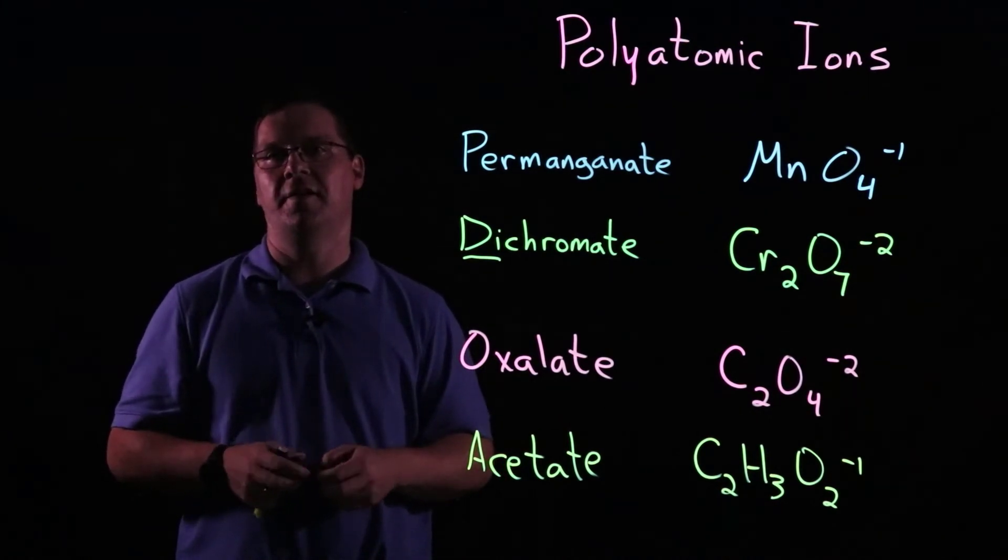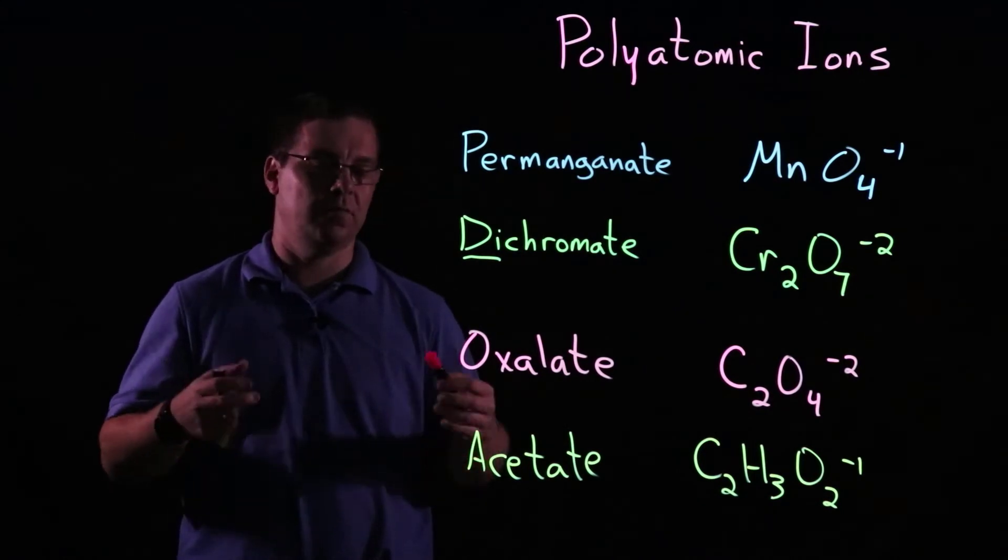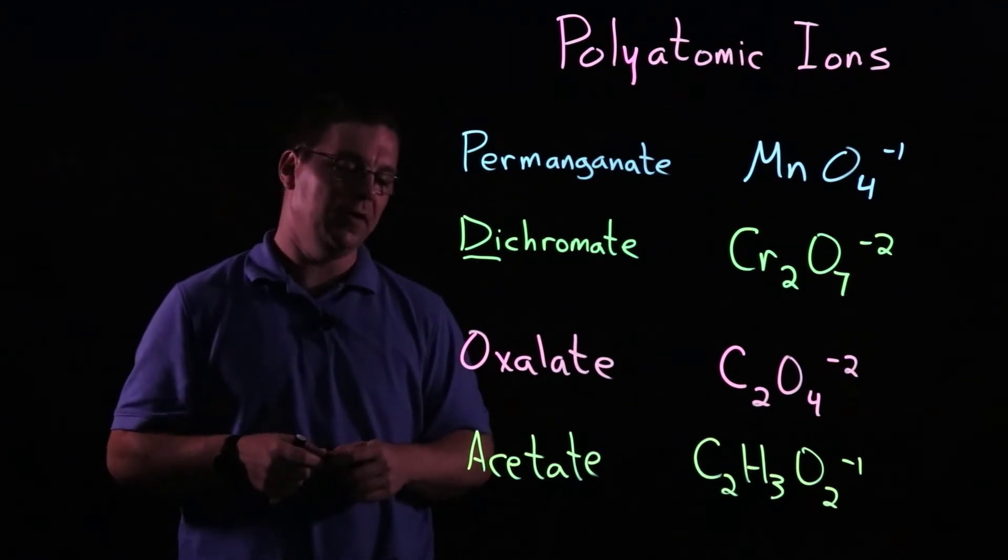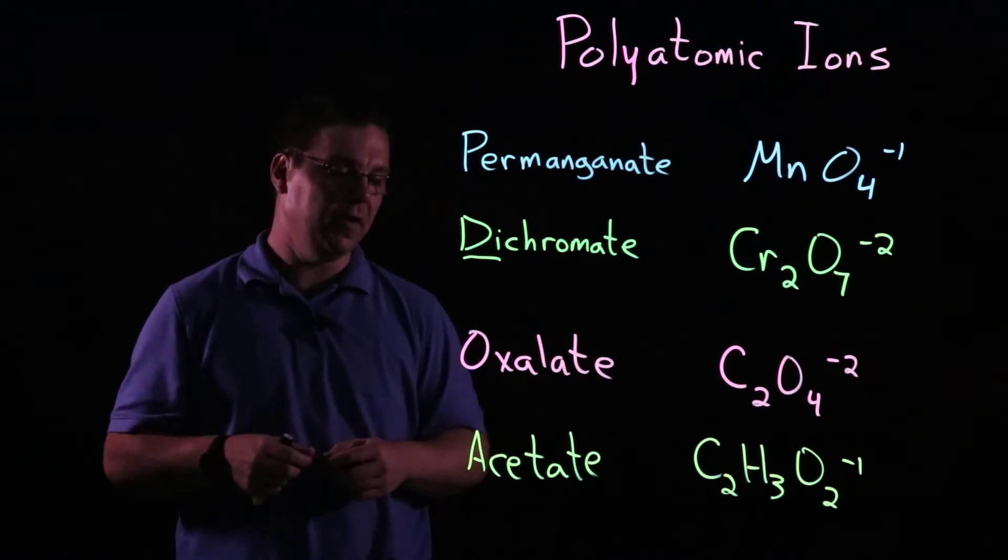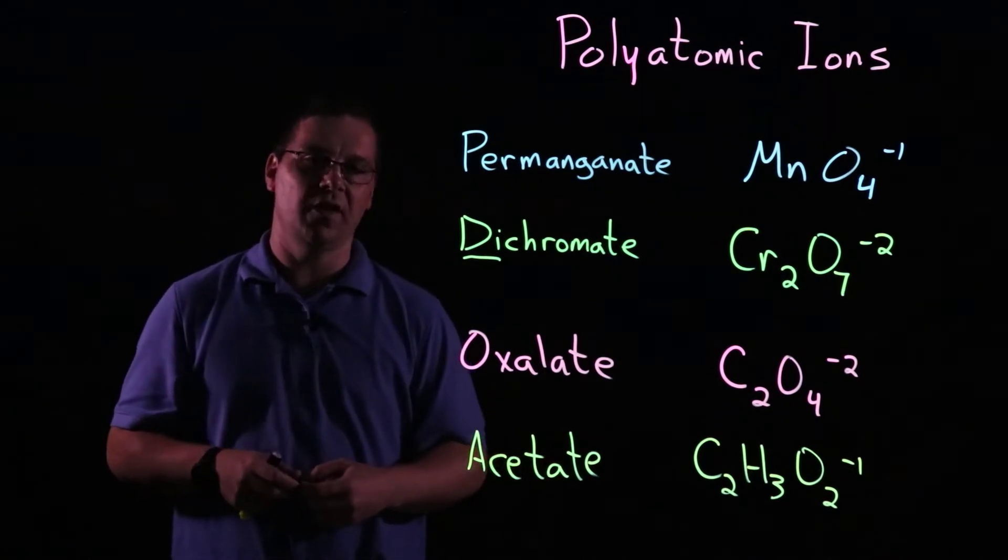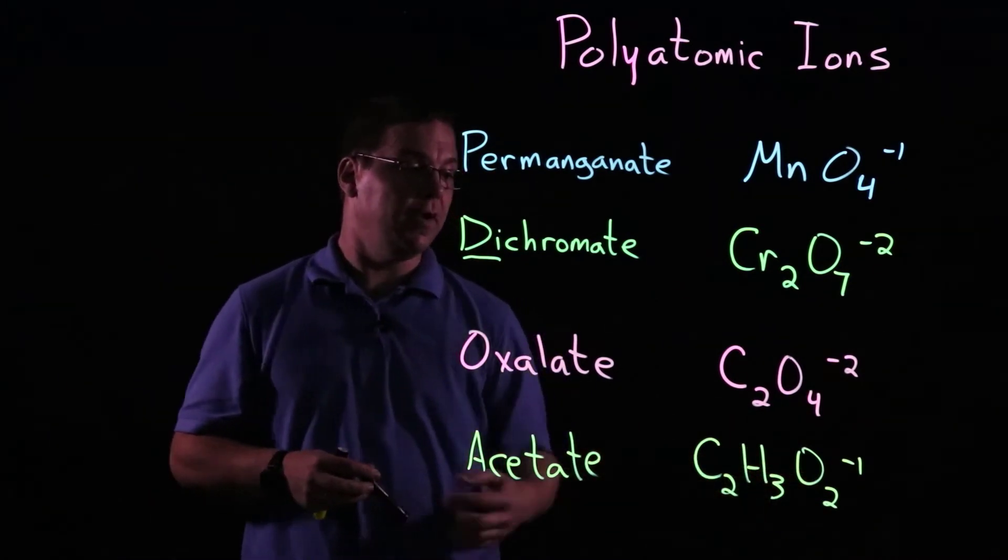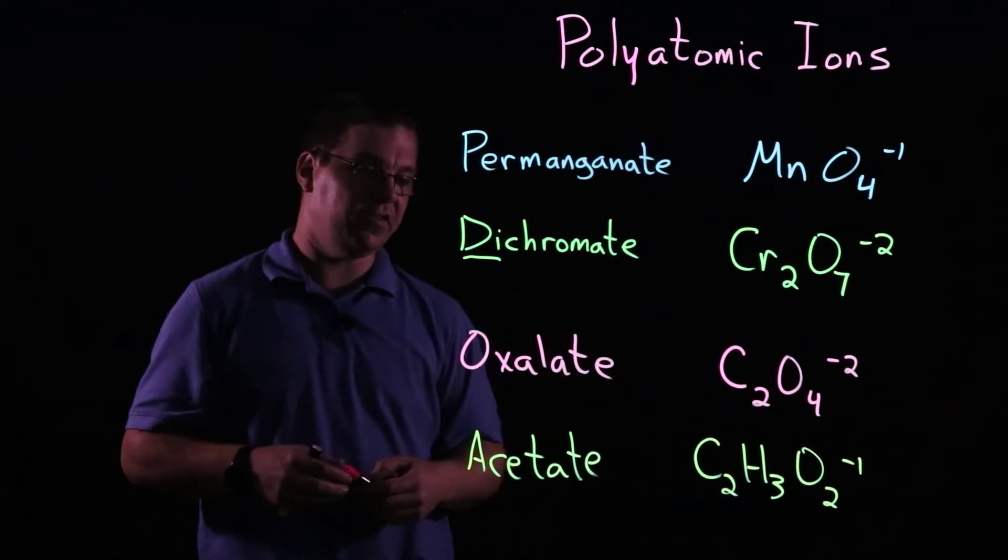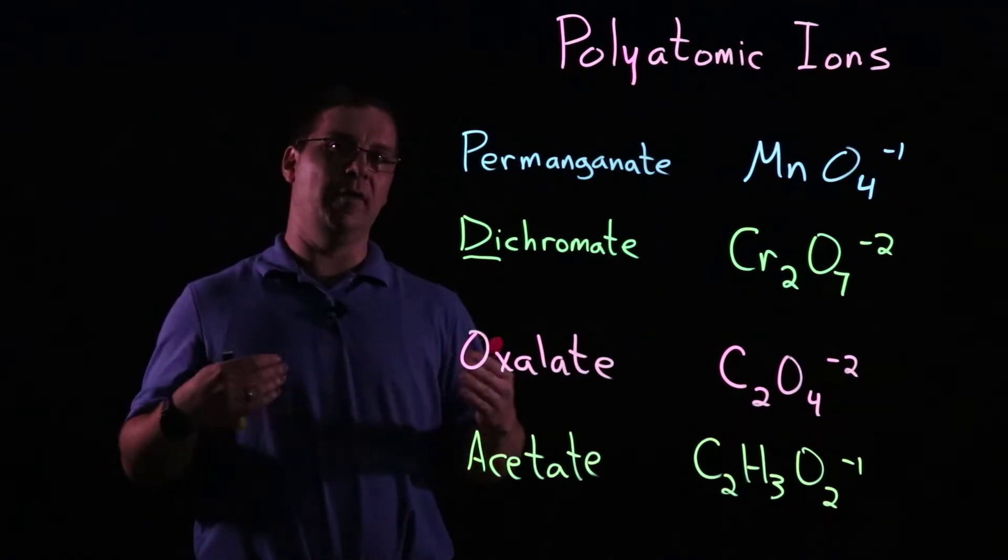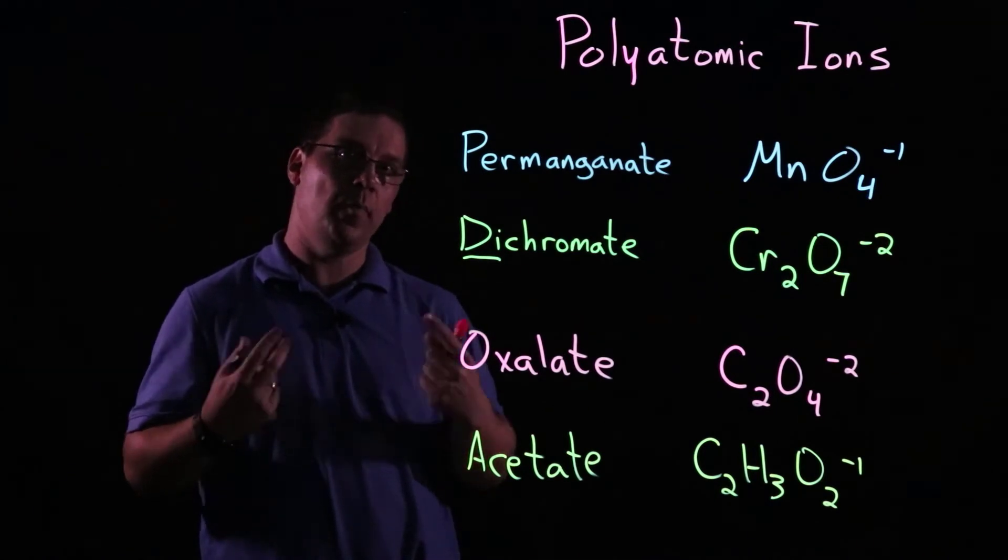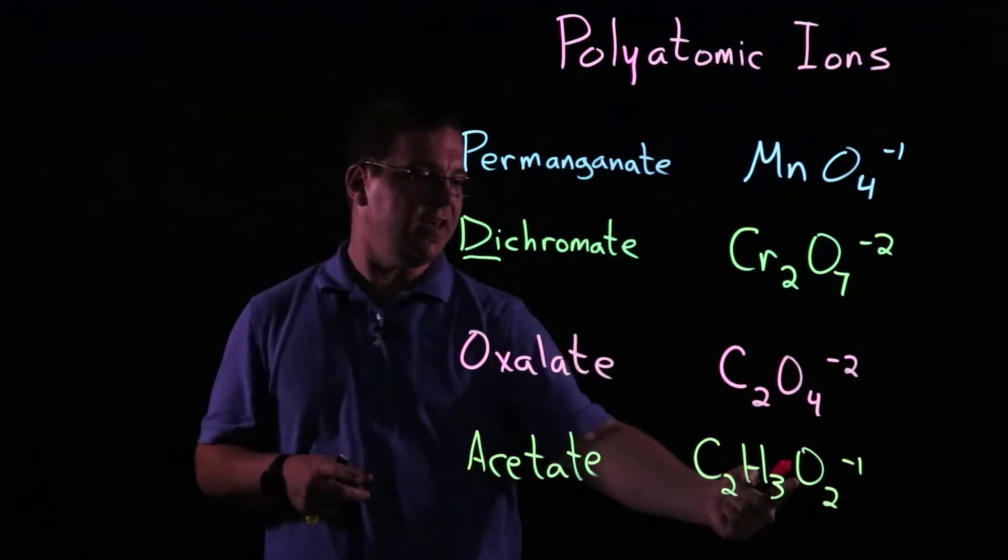Another goofy one that I come up with and tends to work, works for me, students tend to remember it, come back and tell me that they remember it, is for acetate. And so acetate has the formula C-2-H-3-O-2 with a minus one charge. And so it's unique in that it's a little bit longer. It's got more than just two elements in it. It's got three elements in it, but it still ends with ATE, ends with oxygen.